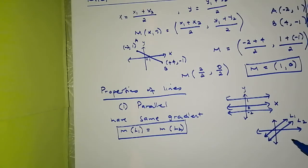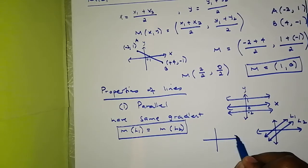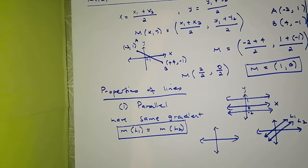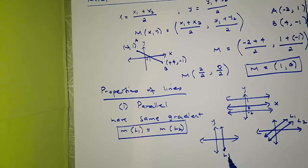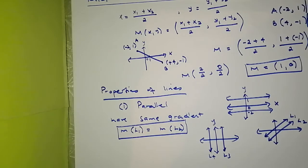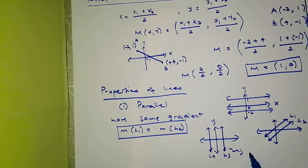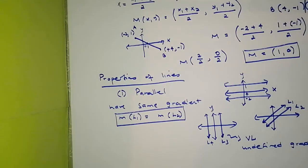Vertical lines also form parallel pairs — for example, line 3 and line 4 drawn parallel to the y-axis. Their gradient is the same, but as we've learned, vertical lines have an undefined gradient. So all vertical lines have an undefined gradient and all horizontal lines have a gradient of zero.